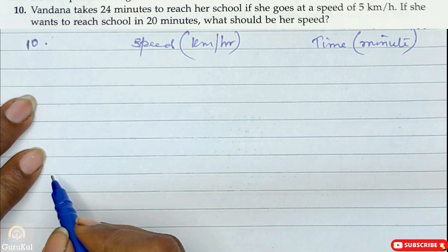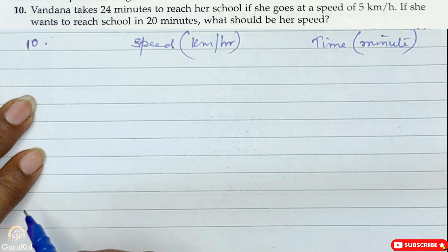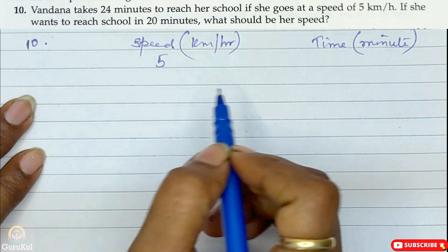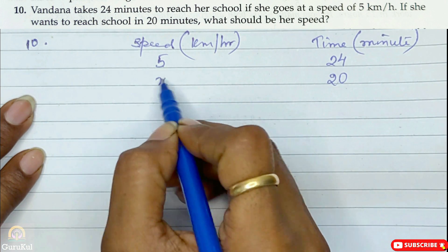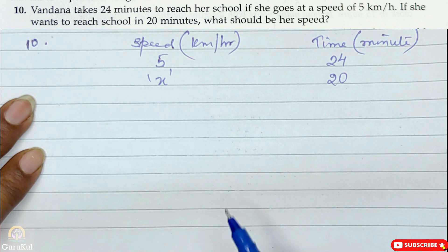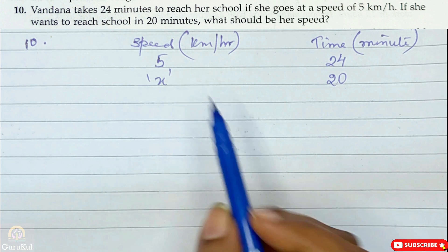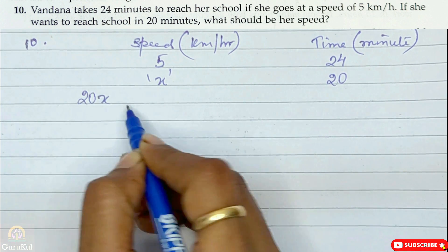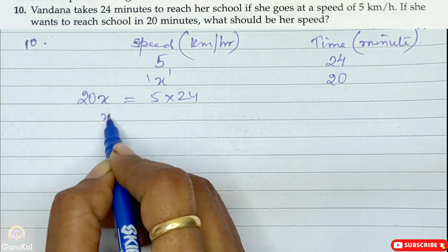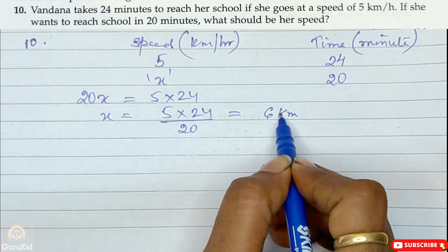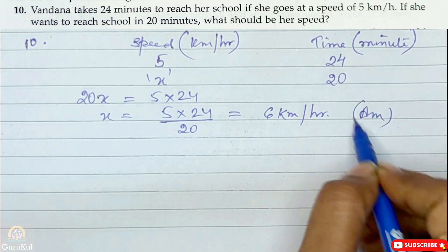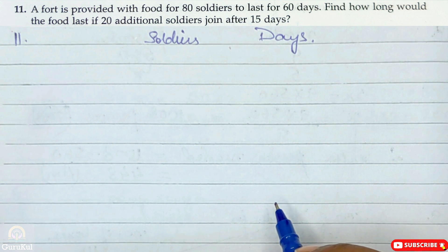Question number 10: Vandana takes 24 minutes to reach her school if she goes at a speed of 5 km/h. If she wants to reach school in 20 minutes, what will be her speed? Less time means more speed needed. So 20x = 5 × 24, giving x = 120 ÷ 20, which is a speed of 6 km/h.